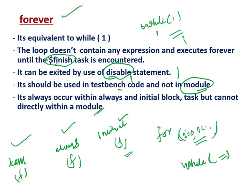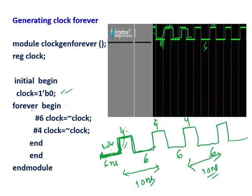It doesn't contain any expression, like other loops such as for loop and while loop. Inside the forever there is no parenthesis - you can see here: forever, after forever there is a begin and end. So there is no parenthesis, so there is no expression - because there is no parenthesis, there is no expression for the forever loop.